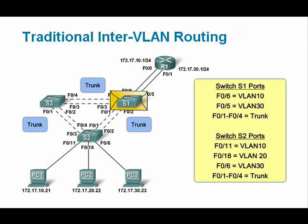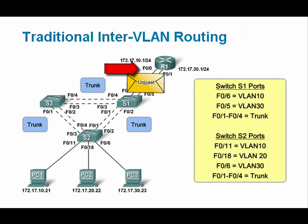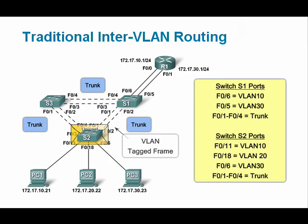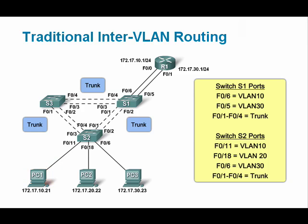In this example, packets from PC1 flow into the router's F00 interface. The routing process is then completed, and the traffic flows out of the router's F01 interface toward PC3. Note that although we have redundant trunk ports between switches, each router port only participates in a single VLAN.